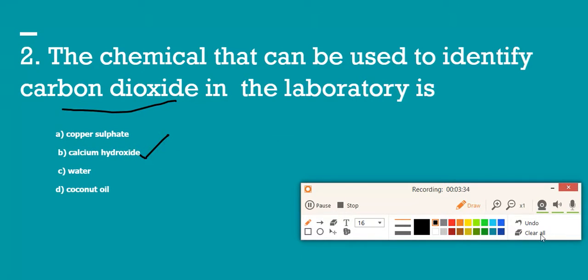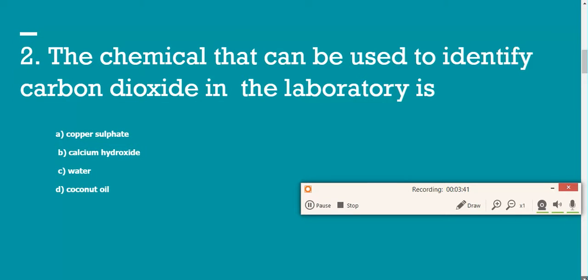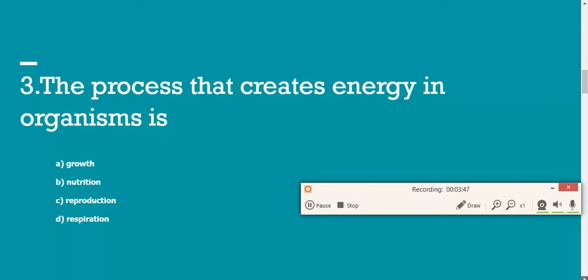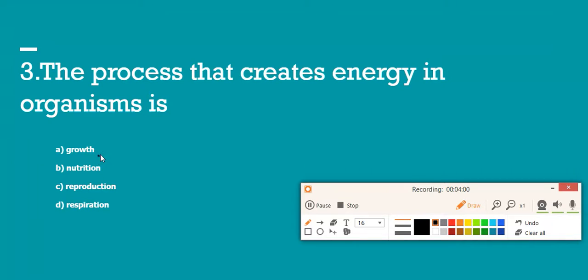We'll move to the next question, which is number three: the process that creates energy in organisms. You have four options - growth, nutrition, respiration, and reproduction. What produces the energy in living organisms? Growth, no. Nutrition, meaning intake of food - when they digest, energy is produced, but that is not the answer we are looking for.